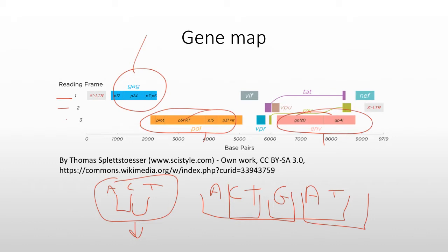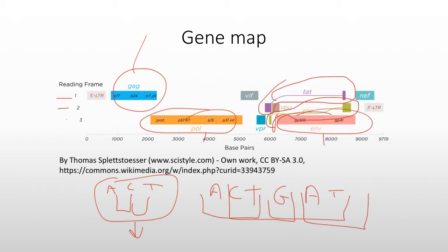The image also shows that some genes are separated. The TAT gene, the transcriptional activator, is actually split and exists in two different reading frames. The REV gene is similar. TAT and REV are known as regulatory proteins. We have our structural proteins, our regulatory proteins, and the rest are classified as accessory proteins.